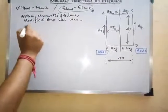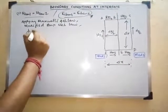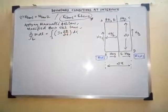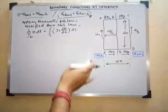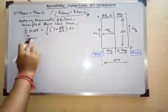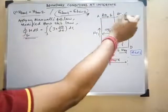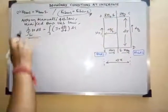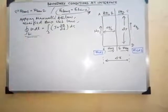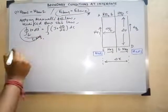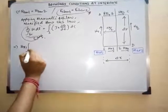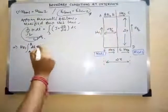The modified Ampere's circuit law states that the closed line integral of H·dL equals the surface integral of (J + dD/dt)·dS. We evaluate the left-hand side — the closed line integral of the magnetic field from A to B, B to C, C to D, D to E, E to F, and F to A. This gives: H_x1 from A to B dL, plus H_x2 from B to C dL, plus H_y2 from C to D dL.